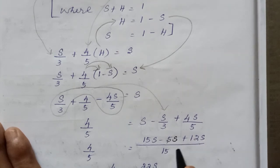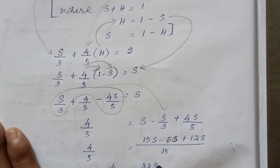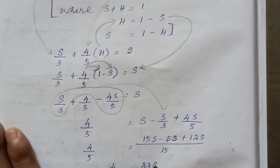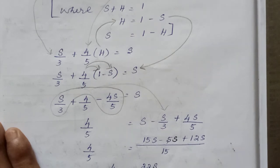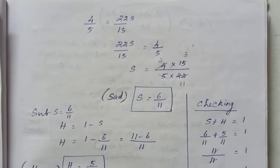This is 5S plus 12S divided by 15. So 4 by 5 equals 22S by 15. Now we have to simplify it.